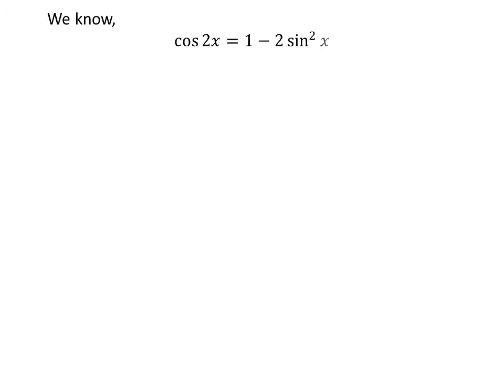We know the famous trigonometry identity: cosine of 2x is equal to 1 minus 2 times the square of sine of x. The proof of this trigonometry identity has been explained in the video appearing in the upper right corner of this video. The link of the video is also given in the description section.